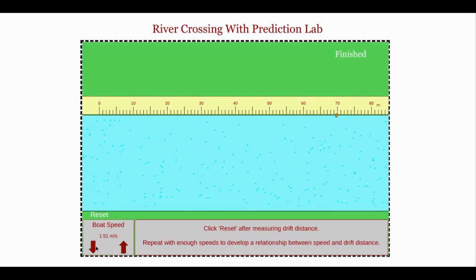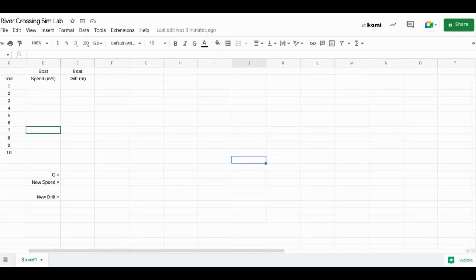So the first set of data, the speed is 1.51 meters per second, and this is 69.9 meters. So you go to the spreadsheet, enter in that speed 1.51 and 69.9.